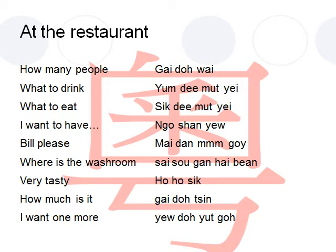Once you are sitting down at a table, usually the waiter would ask you what to drink. What to drink in Cantonese, especially in Hong Kong, they would ask you 飲啲乜嘢.